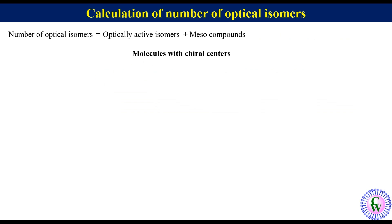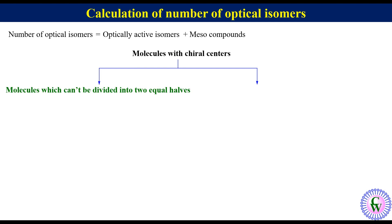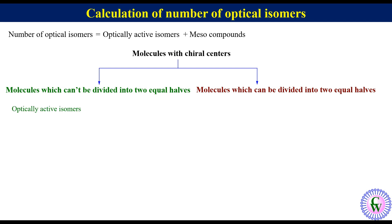Molecules with chiral centers have been divided into two categories: molecules which cannot be divided into two equal halves, and molecules which can be divided into two equal halves. In a molecule which cannot be divided into two equal halves, the number of optically active isomers is 2 raised to the power n, where n is the number of chiral centers.